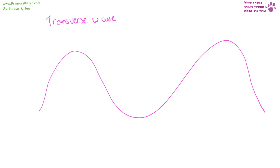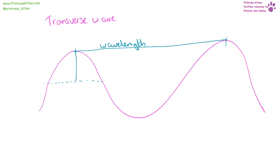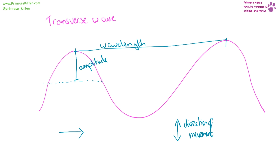A transverse wave goes up and down. From one point to another point — and this doesn't matter whether it's from the top to the bottom or from the middle to the middle — we have the wavelength. The amplitude is measured from the middle to the top or from the middle to the bottom. The direction of movement is up and down, which is also the direction of oscillation, and the direction of energy transfer is sideways.